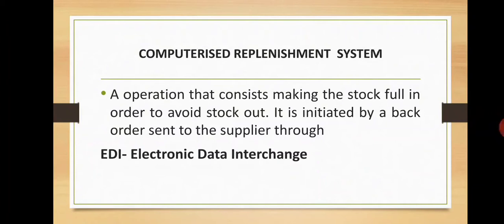The retailer or manufacturer has to ensure that the raw materials or finished products required to meet market demand are kept stocked in his warehouse. Computerized Replenishment System helps with this — it is a technology that helps a retailer or manufacturer keep his warehouse and inventory full without getting delayed. This technology works with the help of a backorder passed to a supplier or manufacturer.